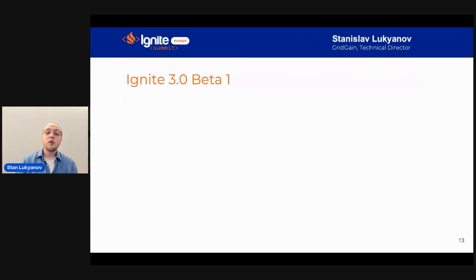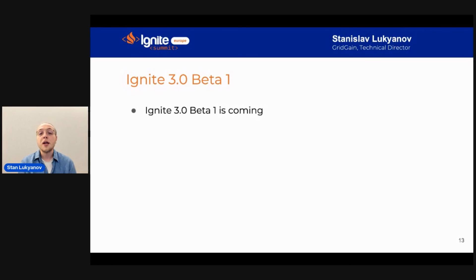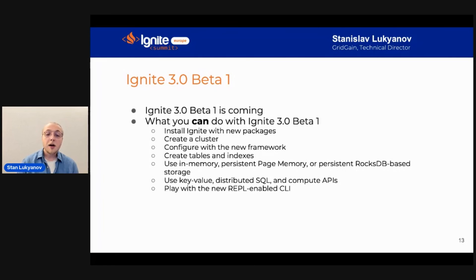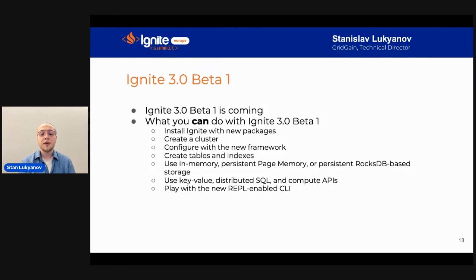These are the key changes, and Ignite 3 Beta 1 is coming out these days — this is the best time to start looking at Apache Ignite 3 and playing with its new features and APIs. With Beta 1, all of the key changes discussed are already implemented. You can install Ignite with the platform-specific packages, use the new CLI, use key-value, SQL, and compute to build your Apache Ignite 3 applications.